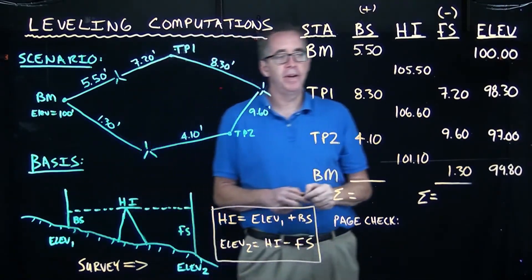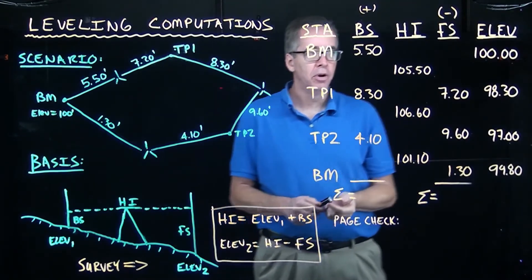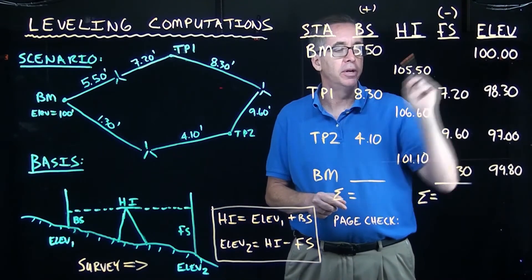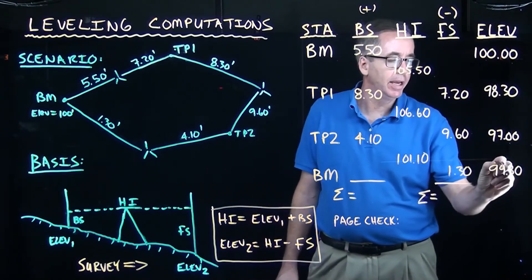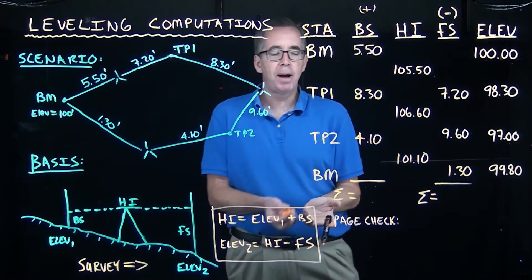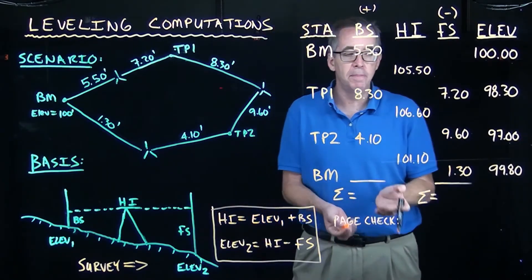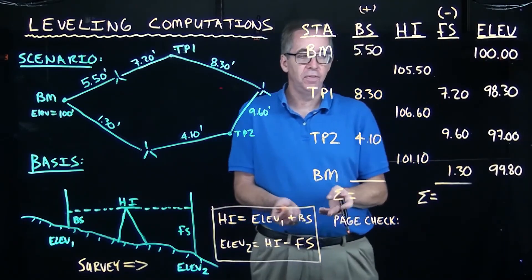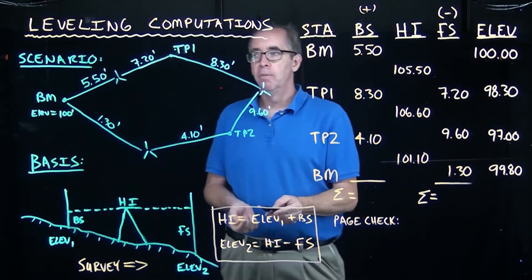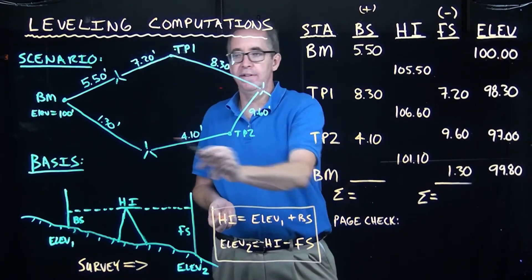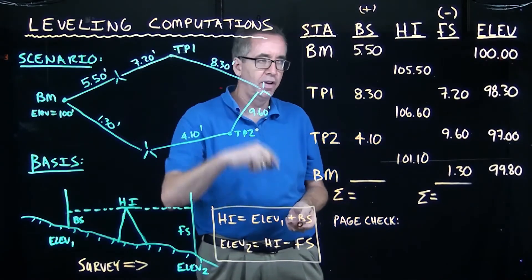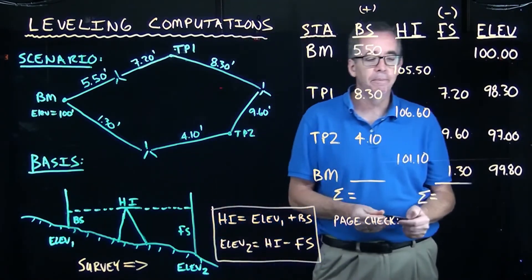So what this means is when we've gone through this whole loop and we've done the leveling, we have an error or a misclosure and that's the difference between the original elevation, which was 100 feet, and the elevation that we get once we completed the survey of 99.8. So we're about 0.2 feet low. So we have a misclosure of 0.2 feet. Not bad, not necessarily great. One thing we don't know about this is the distances that are involved. If this was several miles, that would be really good. If this was just a couple hundred feet, that wouldn't be so great.